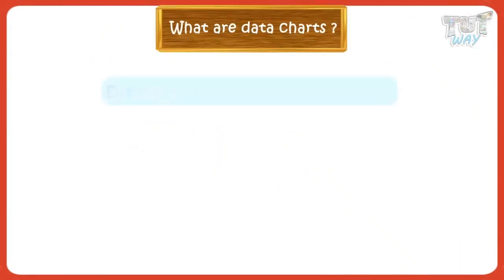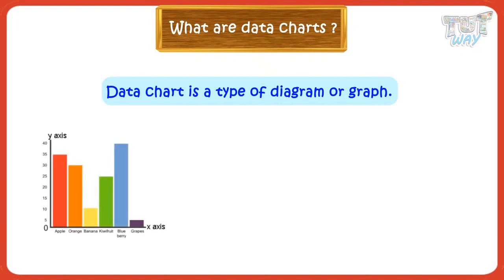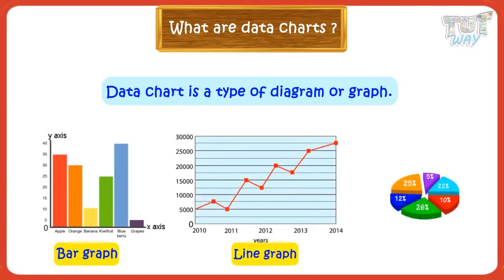What are data charts and why do we use them? A data chart is a type of diagram or graph where data is represented by various symbols such as bars in a bar graph, lines in a line graph, or slices in a pie chart. Charts make it easy to understand large quantities of data and the relationship between parts of data. Data given in the form of charts is read more quickly. There are different types of data charts.